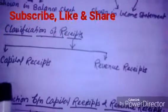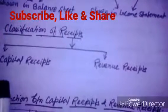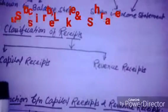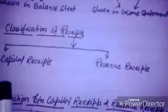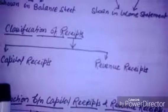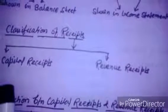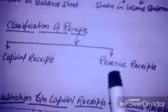Regarding accounting treatment: first, capital receipts are credited to the respective account of capital nature. Second, capital receipts are shown on the liability side of the balance sheet. Now we move on to revenue receipts.